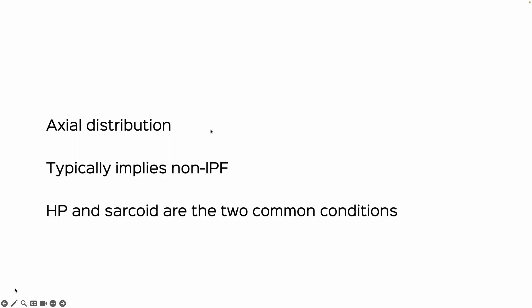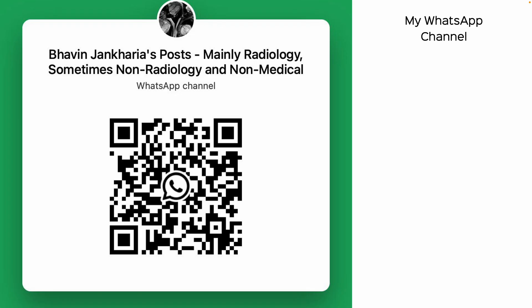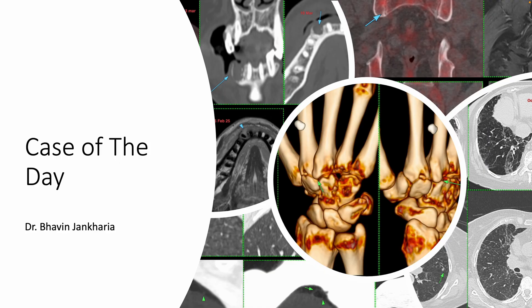Axial distribution is when the lesions go from the hilum to the periphery, and it typically implies a non-IPF form of fibrotic ILD. Hypersensitivity pneumonitis and sarcoidosis are the two common conditions. I hope this has answered your question and helps others too. That's case of the day today — thank you for viewing.